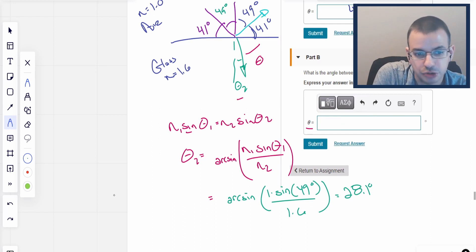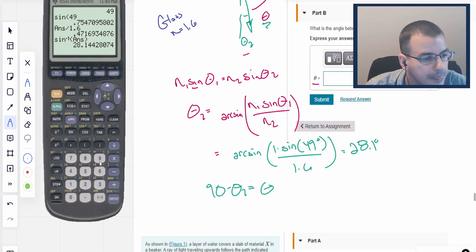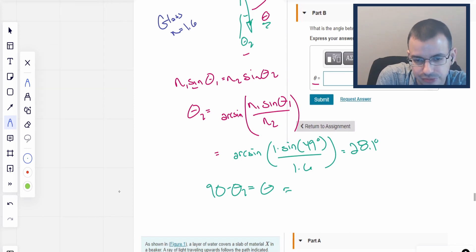So I'll do sine of 49, divide by 1.6, inverse sine, and we're in degrees. So this should give us 28.1 degrees. That's with respect to the normal. So then 90 minus theta 2 is going to equal theta. So we'll do 90 minus that answer, and that gives us about 62 degrees. So the angle they're looking for is 62 degrees.